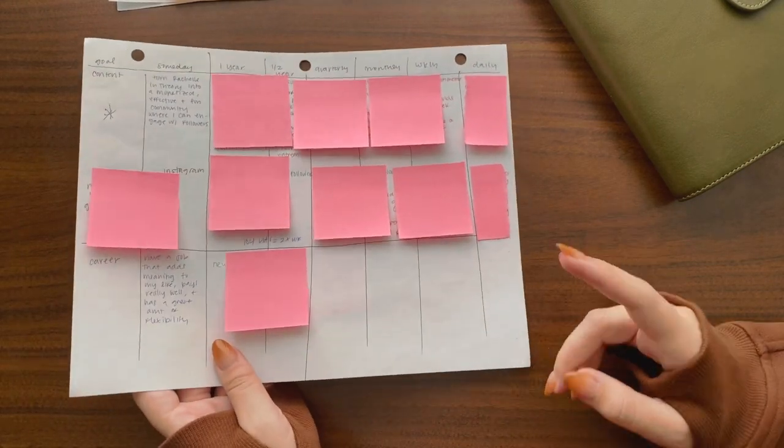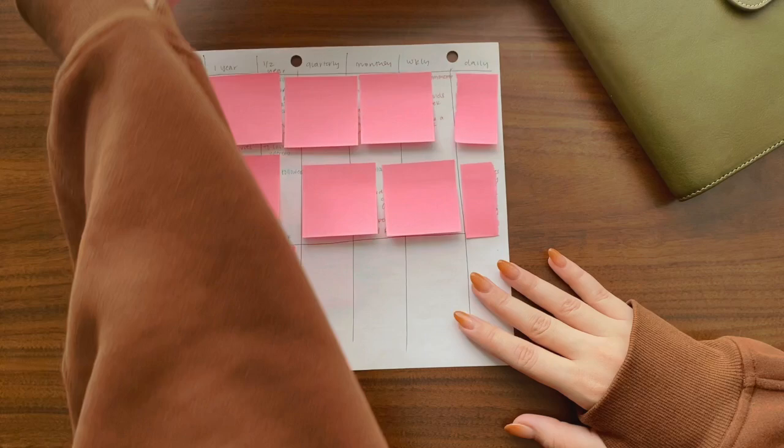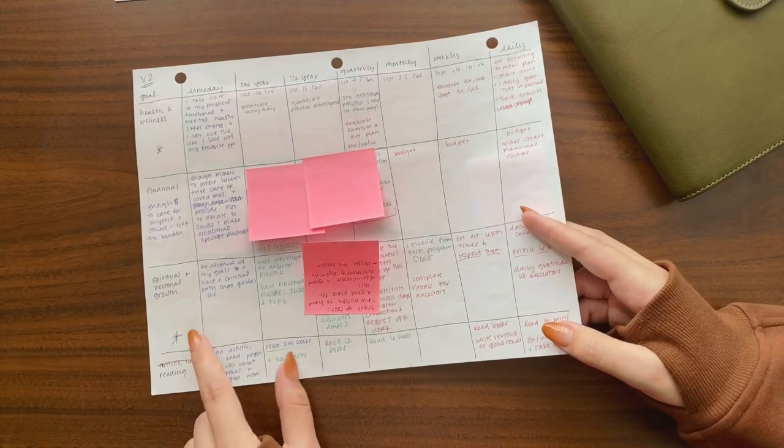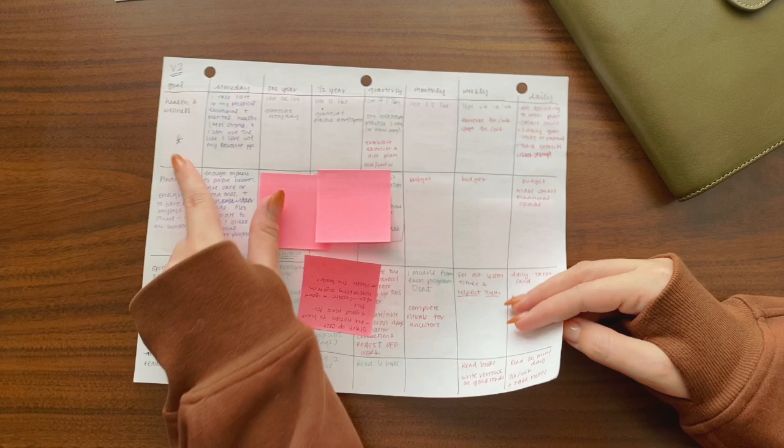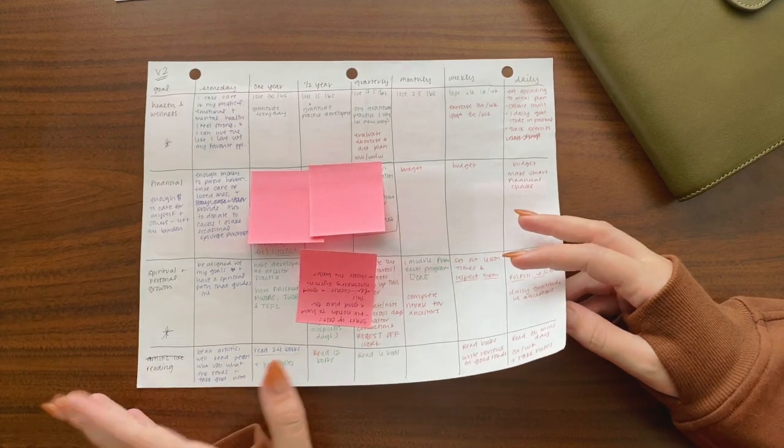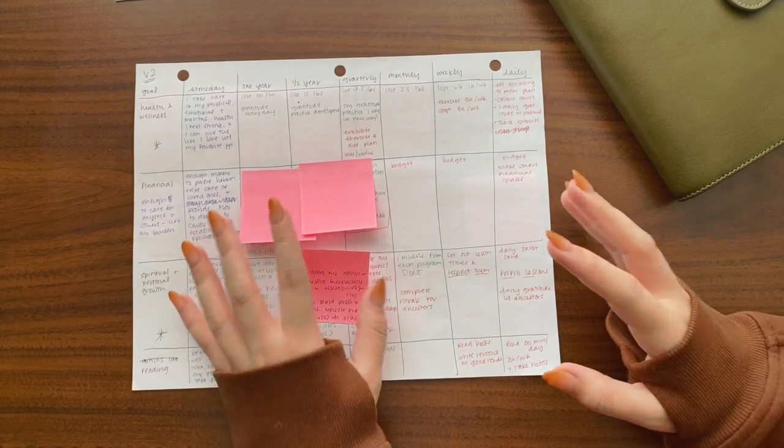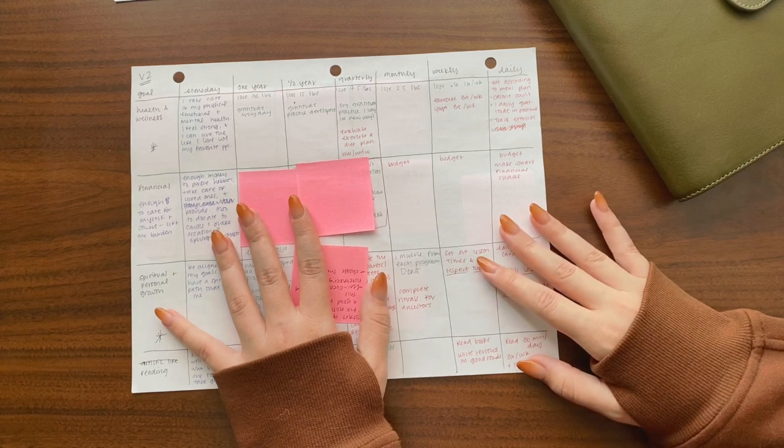But yeah, that just goes to show you, I went from like seven-ish to nine-ish goals to five goals with three priorities, content, physical health and wellness, and spiritual and personal growth. And I'm really, really happy with that. I'm really, really happy with this.